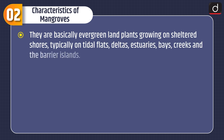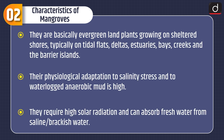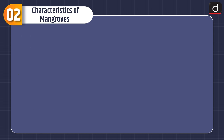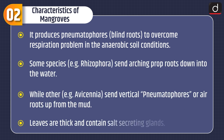Now moving on to characteristics of mangroves. They are basically evergreen land plants growing on sheltered shores, typically on tidal flats, deltas, estuaries, bays, creeks and the barrier islands. Their physiological adaptation to salinity stress and to waterlogged anaerobic mud is high. They require high solar radiation and can absorb fresh water from saline or brackish water. They produce pneumatophores, or blind roots, to overcome respiration problems in the anaerobic soil conditions.